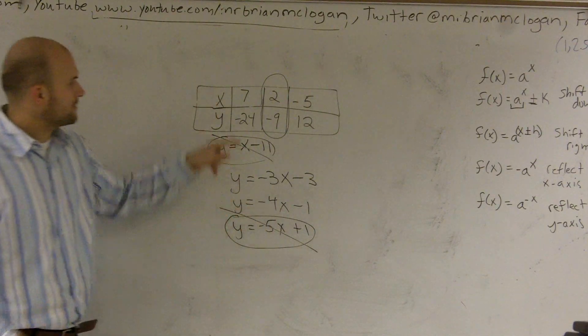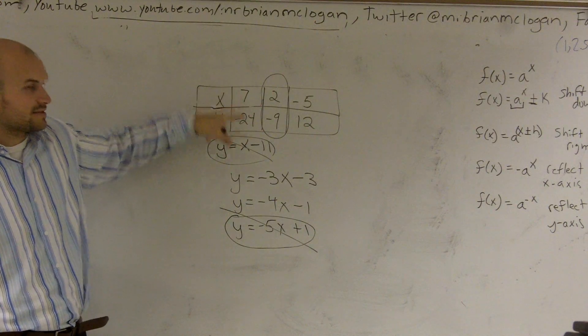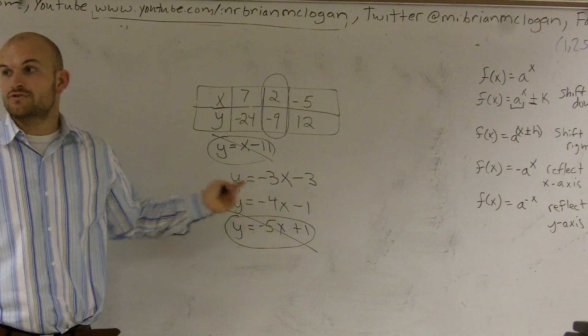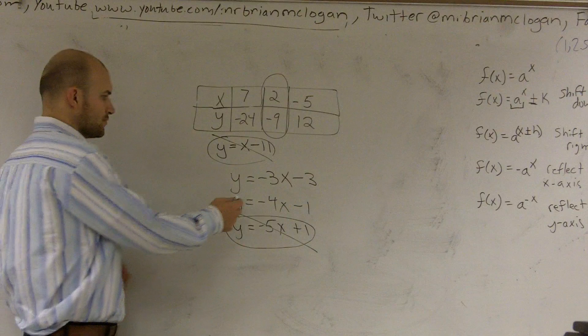Let's try this one. 7 times negative 4 is negative 28. Minus 1 would be negative 29. So, therefore, this rule doesn't work.